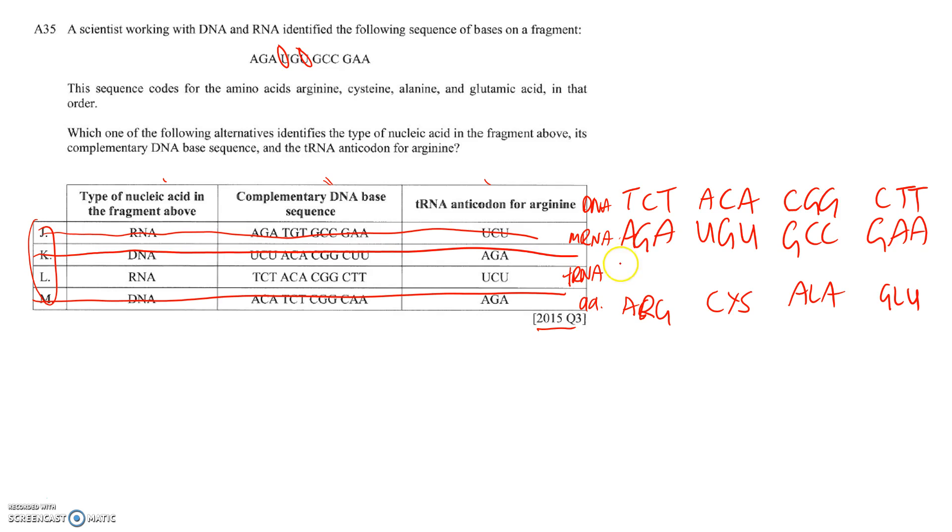The tRNA must be U, C, U. Here's the codon A, G, A. Here's the anticodon U, C, U that encodes for arginine. So U, C, U is there as the tRNA anticodon. We know that this one is the one we want to pick and that it is correct.